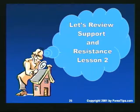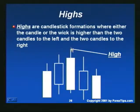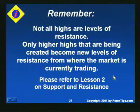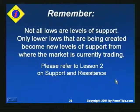A quick review of support and resistance from Lesson 2: a high is the body or wick of a candle that is higher than the two candles to its left and two candles to its right. Not all highs are levels of resistance — only higher highs being created become new levels of resistance. Lows are identified when two candles to the left and two candles to the right are higher than either the wick or body low. Not all lows are levels of support — only lower lows being created become new levels of support.